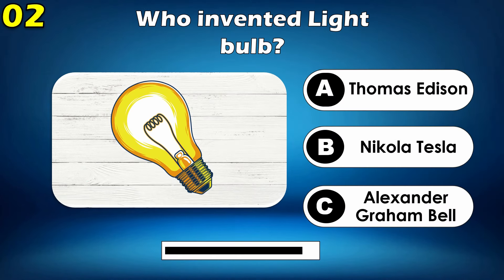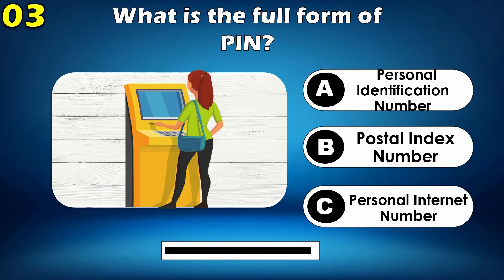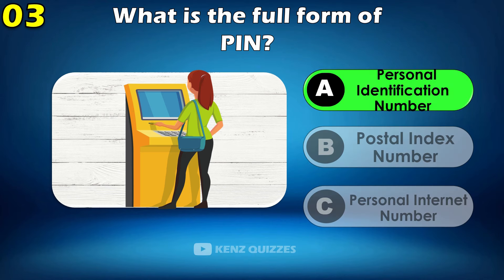Who invented the light bulb? Thomas Edison. What is the full form of PIN? Personal Identification Number.